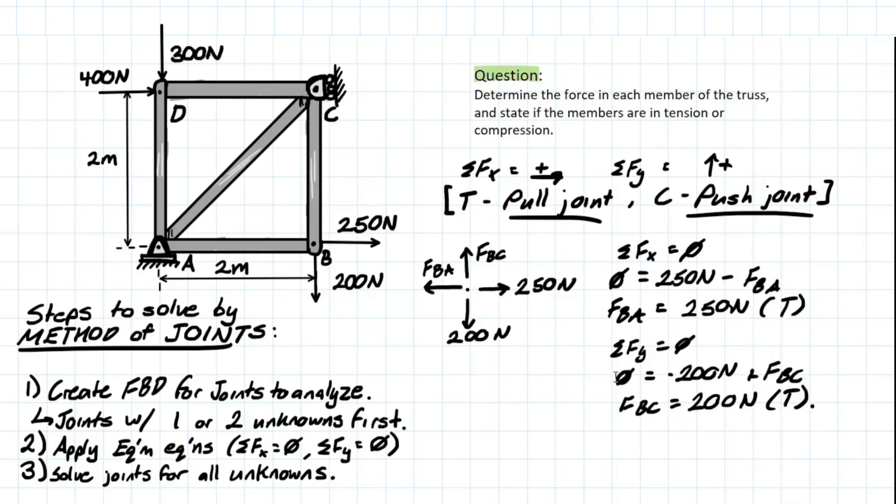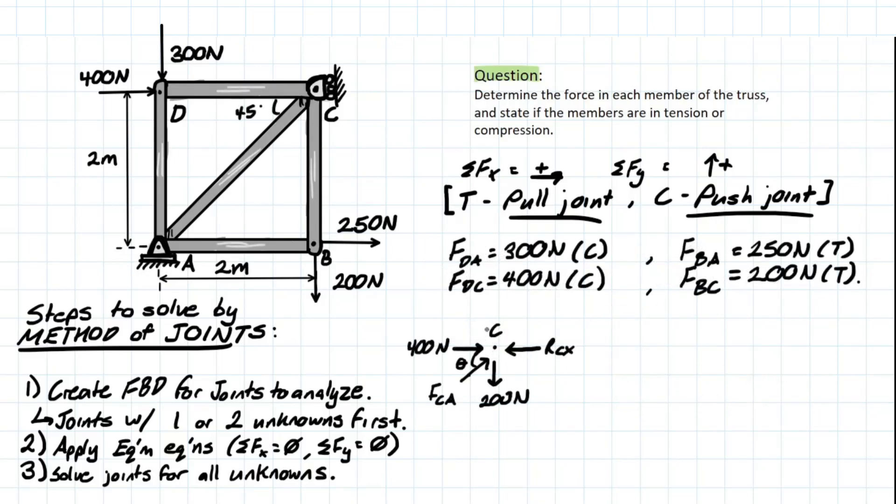Now the last part of the problem we're going to need to solve for member AC's force component. Finally, we're solving for joint C to get that FCA member force and we have all of our unknowns solved for previously and we know which ones are compressive and which ones are tensile. So we drew them relative to our conventions. How can we get FCA? Well, we know that we're looking for the y component of this force.